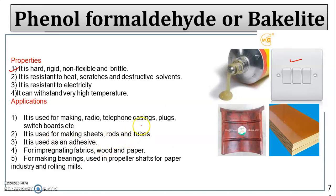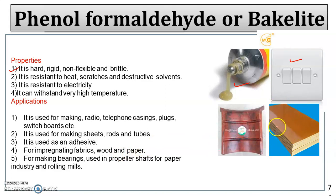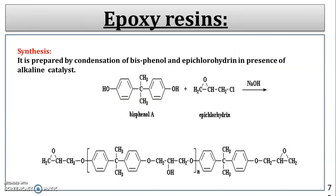Bakelite is used as an adhesive — a sticky bonding substance. It is also used for impregnating fabrics, wood, and paper, and for making bearings used in propeller shafts, paper industry, and rolling mills.